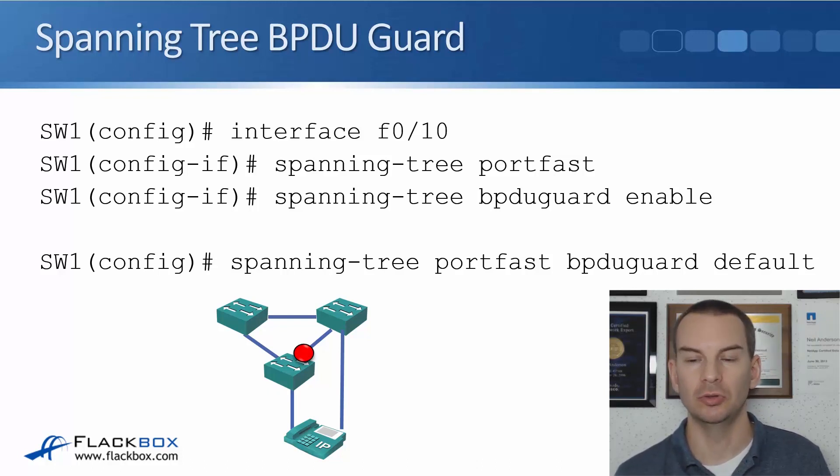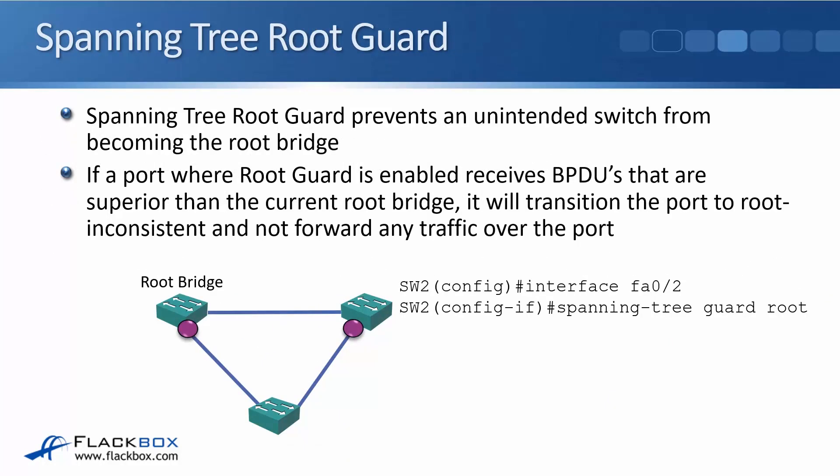Another spanning tree command to cover is Root Guard, used for a different reason than PortFast and BPDU Guard. Root Guard prevents an unintended switch from becoming the root bridge. For example, an old switch from a different office may have been the root bridge there but is much older than the current root bridge in your main office. If you plug it into the network without a factory reset and it has a higher priority than the current root bridge, that old switch — which is not centrally located — will become the root bridge, which you want to prevent.